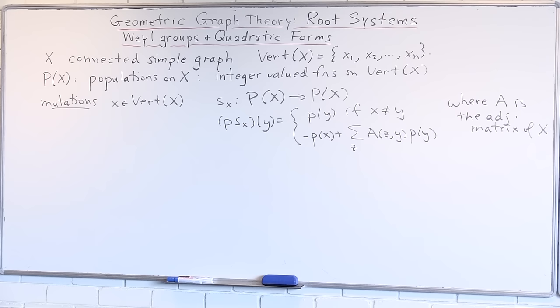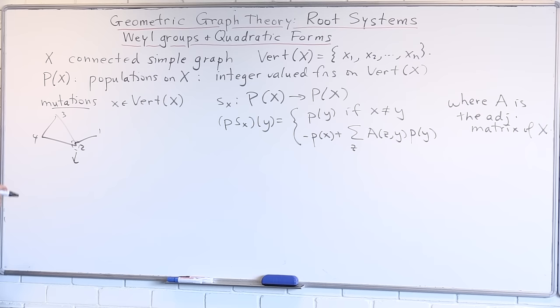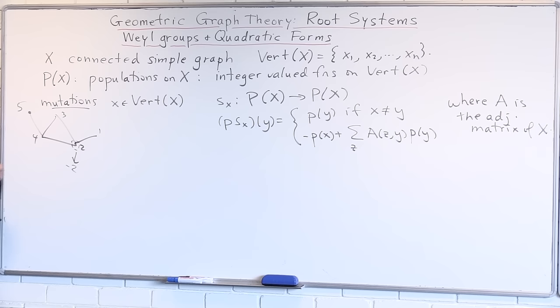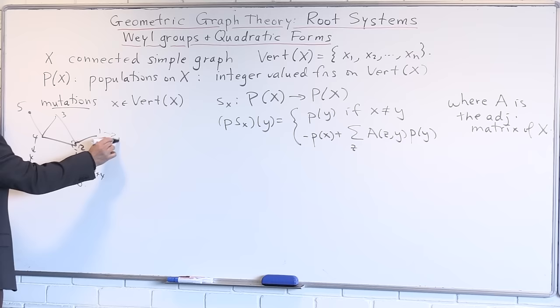What does this mean? If we have some graph and some population on it, and we're mutating at a vertex, then the population at that point changes to its negative, and then we add the directly neighboring populations. So we add one plus three plus four, which would be a total of six. On the other hand, the same mutation will keep all of the other ones fixed.